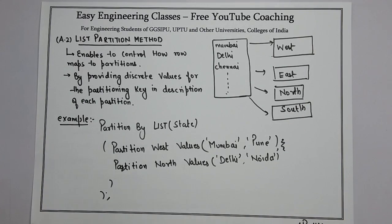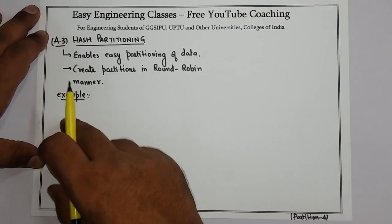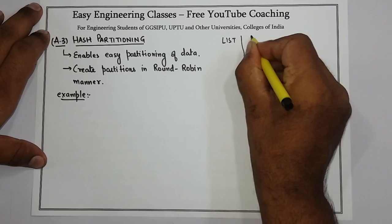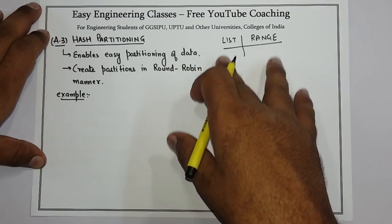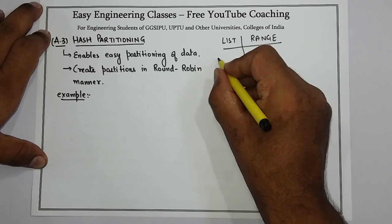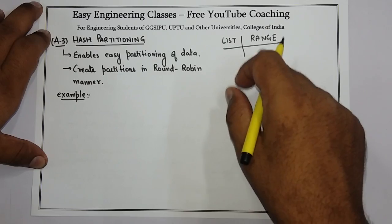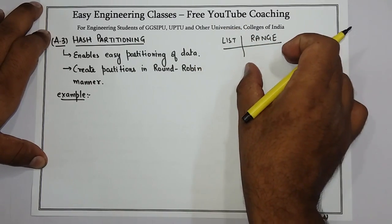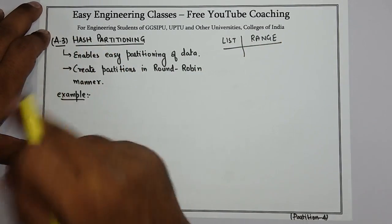The next method is hash partitioning. It enables easy partitioning of data and creates partitions in a round-robin manner. In the previous methods — list and range — there is one limitation: even distribution of data in each partition is not possible. In list partitioning, one region may have more rows than another. Similarly in range, one range may have more values than another. Even distribution is possible with hash partitioning.